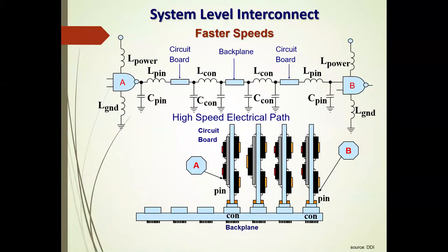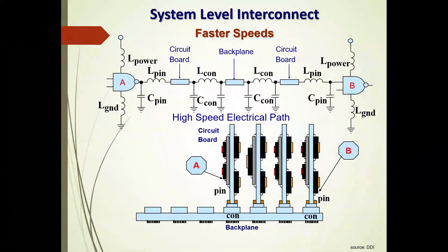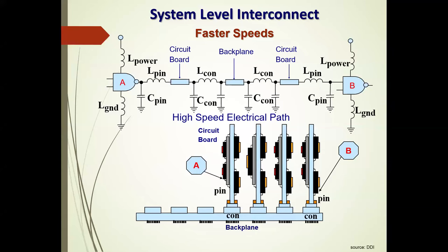At the system level, a signal going from driver A to receiver B through a motherboard, daughterboard, or backplane configuration picks up all the parasitics — inductances and capacitances — that are now part of the electrical path from A to B. With slower rise times we could ignore all these, but today we can't. Managing all of these parasitics is essentially what signal integrity is about.